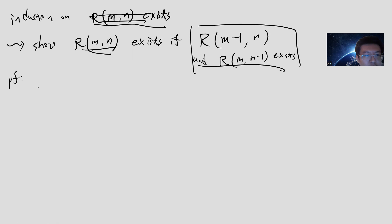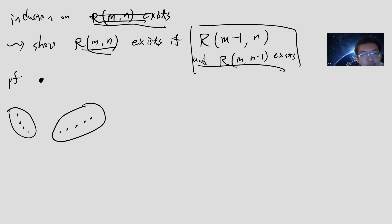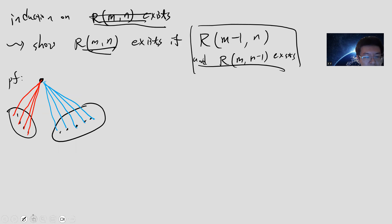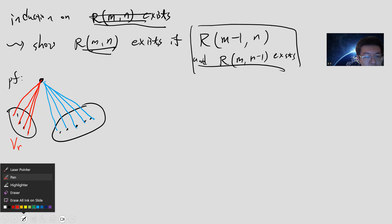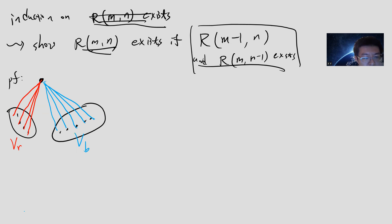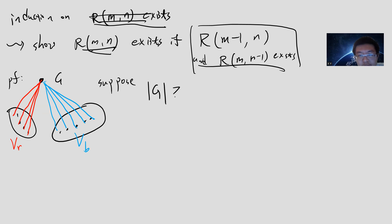So proof - it goes as follows. Let's take a point. We separate the remaining points into two sets: all the points connected to this point by red, and all the points connected by blue. Let's call these sets V_R and V_B. Suppose the number of vertices in this graph G is greater or equal to R(N-1, N) plus R(N, N-1). That's my assumption - let's say this G is large enough.